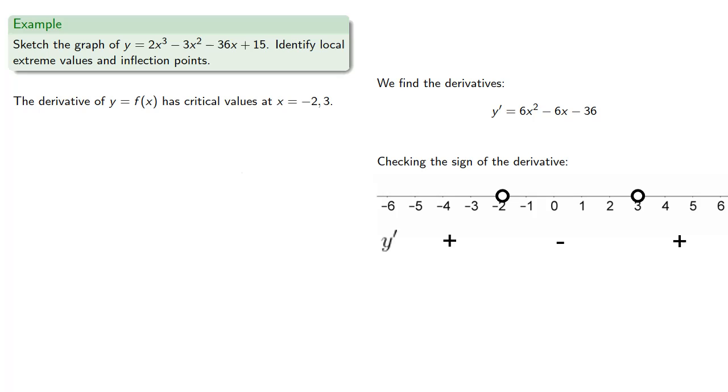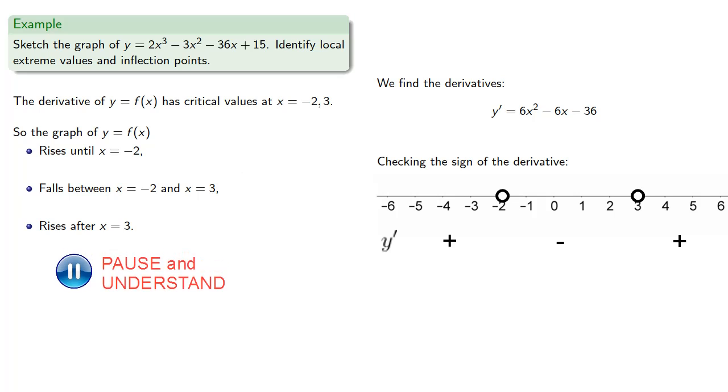And so we see the graph of y equals f of x rises until x equals negative 2, falls between x equals negative 2 and 3, and then rises after x equals 3. And this means it reaches a local maximum at x equals negative 2, and a local minimum at x equals 3.